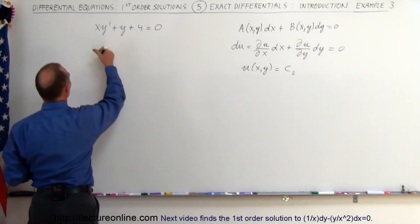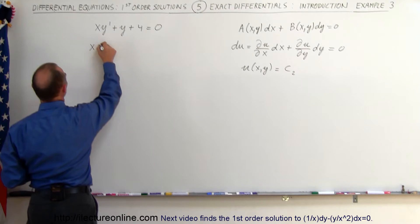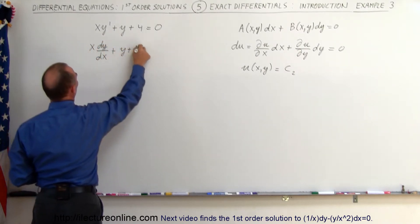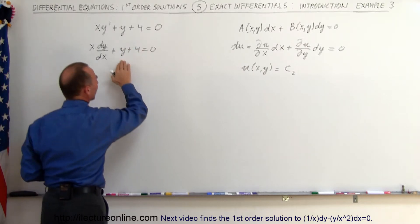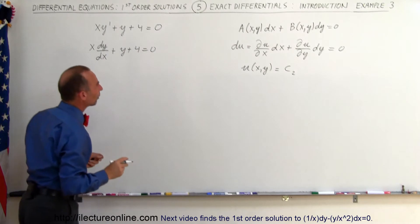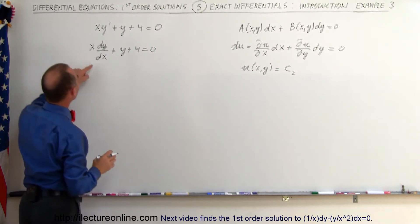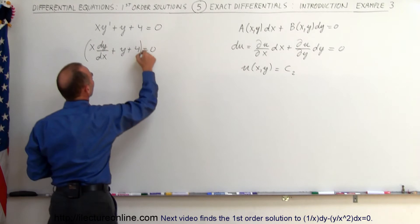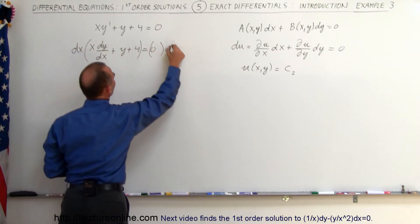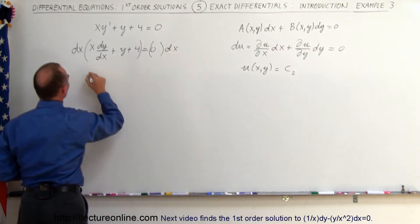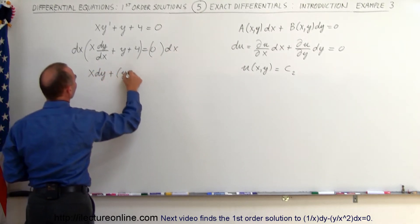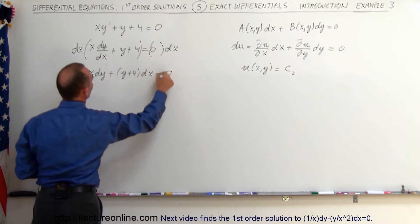Let's replace y' by what y' is equal to, which is dy/dx. So we have x dy/dx plus y plus 4 equals 0. Now we need to make it look like the general format, so the best way to do that is to multiply both sides of the equation by dx. This becomes x times dy plus the quantity (y plus 4) times dx is equal to 0.